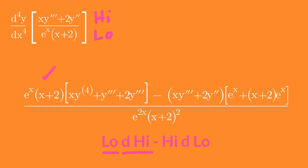Now differentiate the numerator (d high). The derivative of x times y third derivative is x times y fourth derivative plus y third derivative, using the product rule. The derivative of 2y second derivative is 2y third derivative.